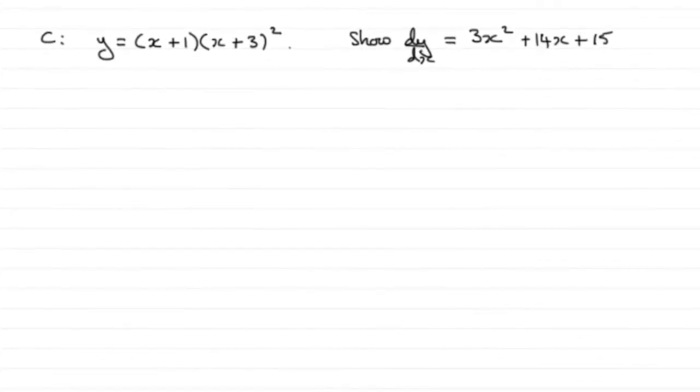Now in this next part, part B, for three marks we've got to show that dy by dx equals 3x squared plus 14x plus 15.